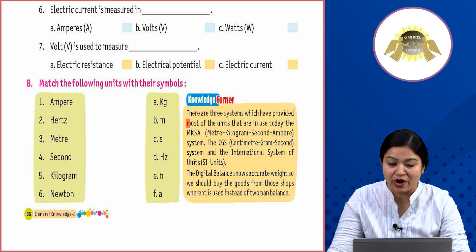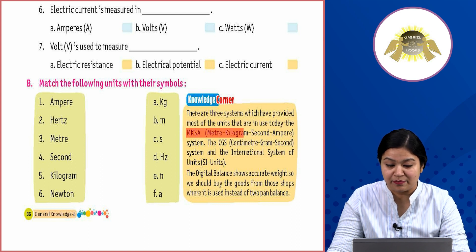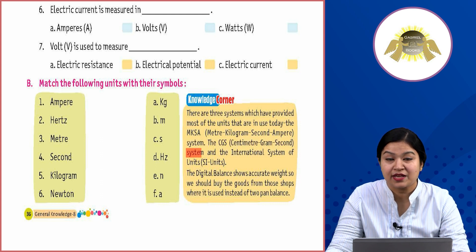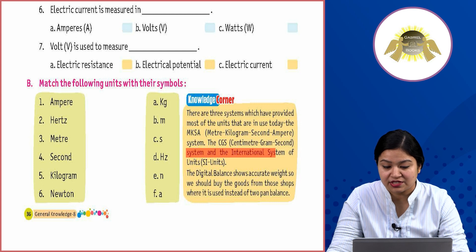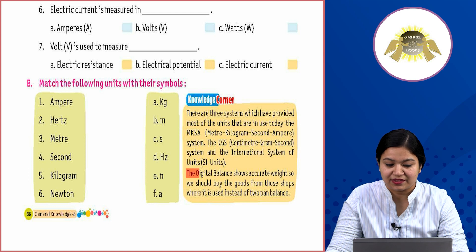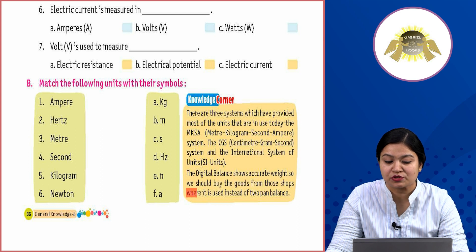Knowledge section: There are three systems which have provided most of the units that are in use today — the MKS (meter, kilogram, second, ampere) system, the CGS (centimeter, gram, second) system, and the International System of Units, SI units. The digital balance shows accurate weight, so we should buy goods from shops where it is used instead of a two-pan balance.